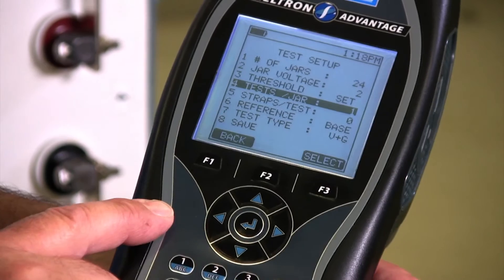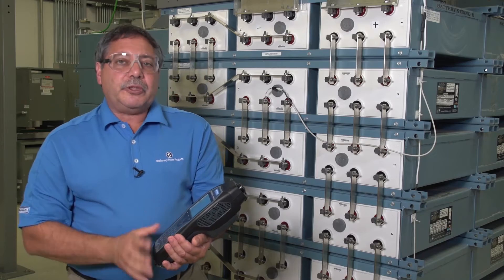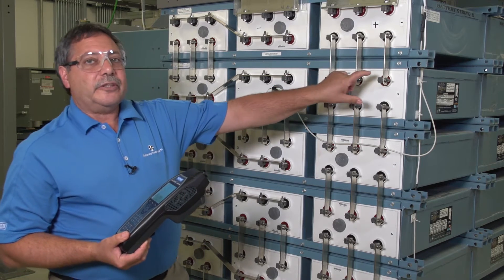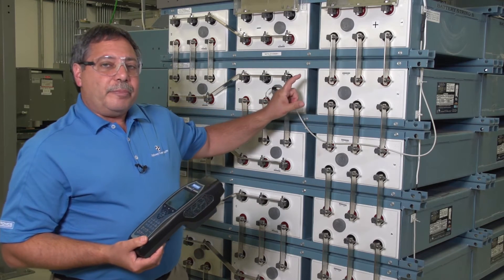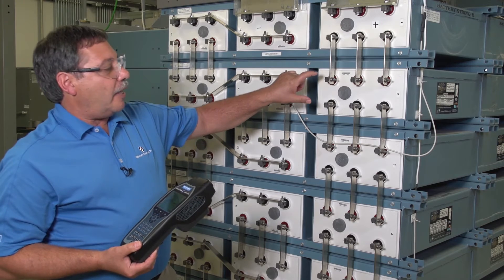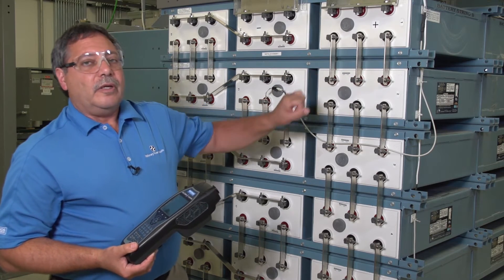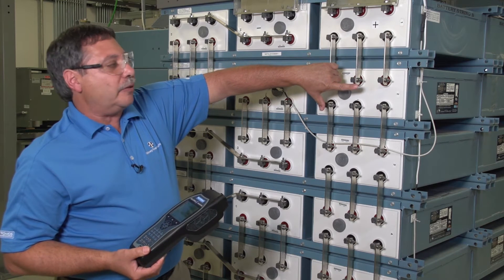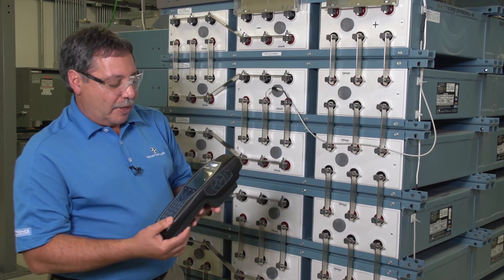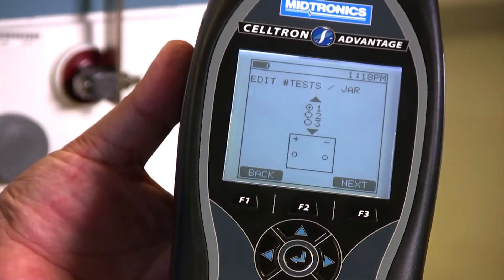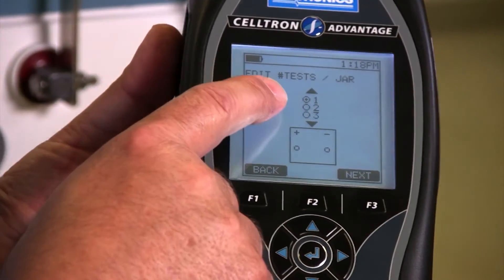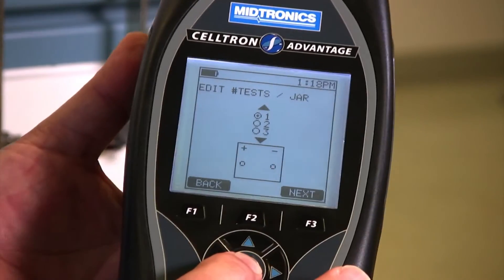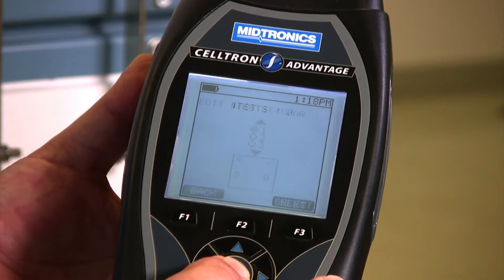Next is going to be test per jar. So test per jar is telling me, in a situation like this where I have three sets of posts, some companies' policy is to test on each set of posts. Other people just make one test across this cell and maybe only do one test per jar. So you have that option if you drill into this menu to do one, two, or three tests per jar, per cell. We're going to keep it here to just do one test.